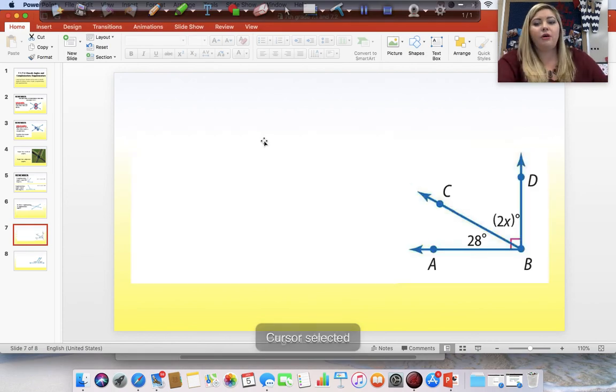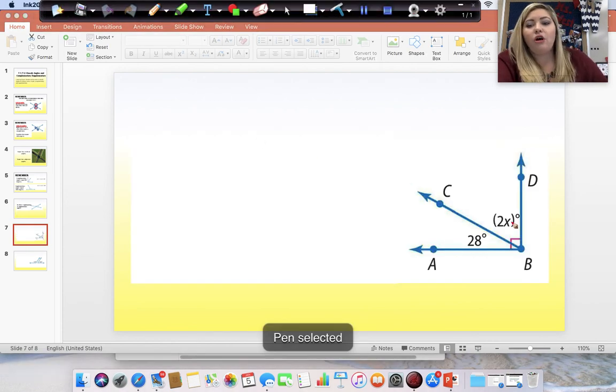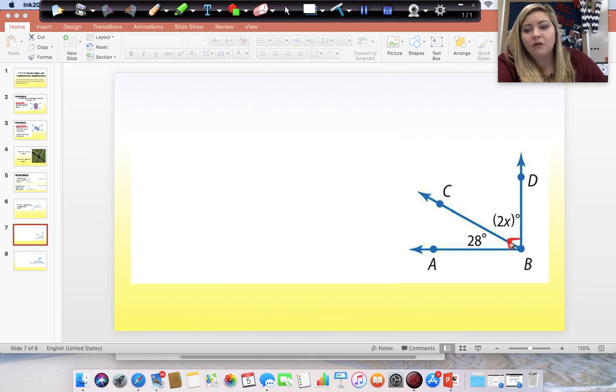Okay. So, when we are trying to solve for a variable here, we know that these two angles equal 90 degrees because we have this little right angle here that tells us that this is a 90 degree angle. So, we know that these two angles equal 90 degrees. So, 2x plus 28 equals 90 degrees.